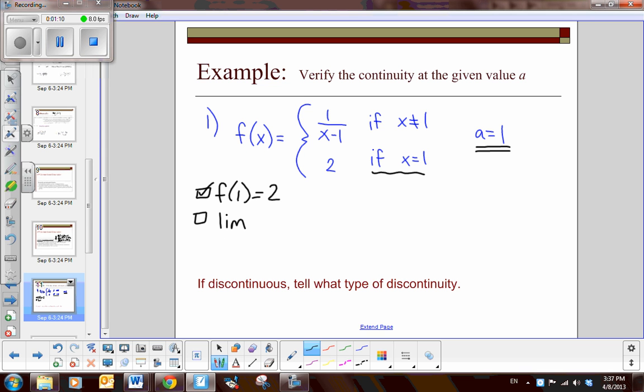Now secondly, does the limit as I approach 1 of my function exist? We have to decide whether we have a limit. Well, 1 over X minus 1, we know that's a rational function shifted over 1 to the right, so it looks something like this. When X is 1, then the Y value is 2. Does the limit exist as I approach 1? As I approach 1 from the left, I'm going to negative infinity. As I approach 1 from the right, I'm going to positive infinity. So the limit does not exist.